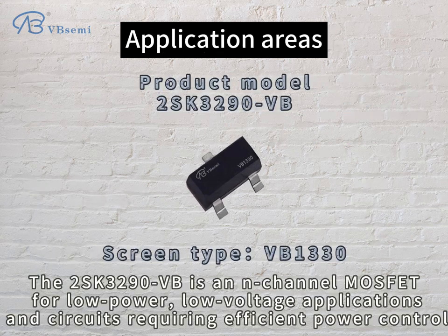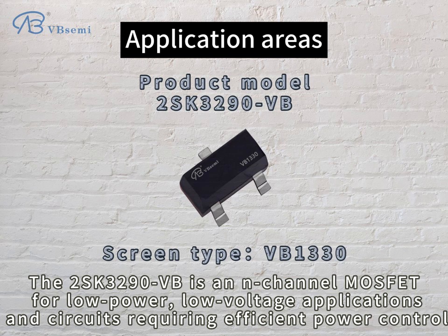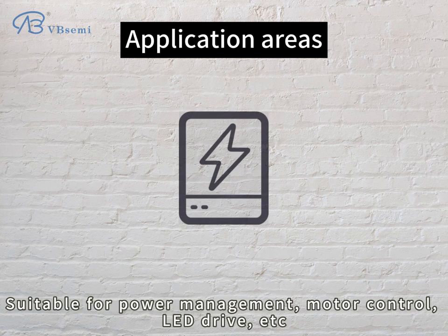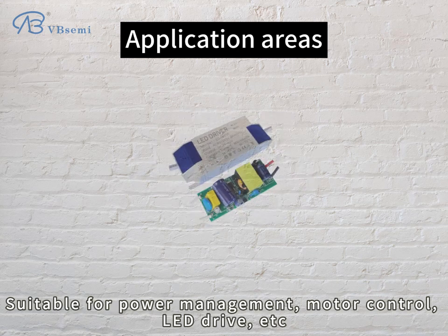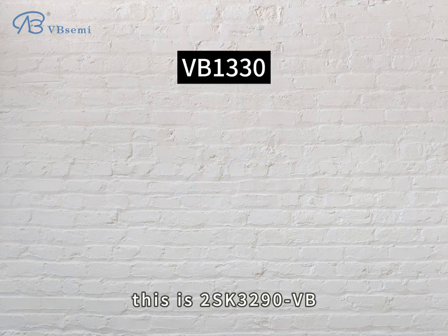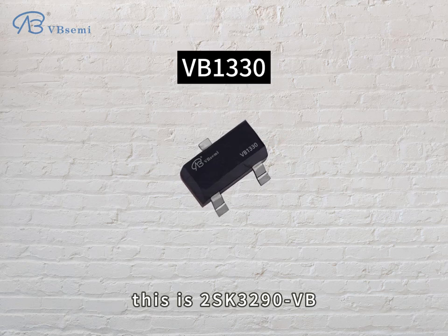The 2SK3290VB is an N-Channel MOSFET for low power, low voltage applications and circuits requiring efficient power control, suitable for power management, motor control, LED drive, etc. This is the 2SK3290VB.